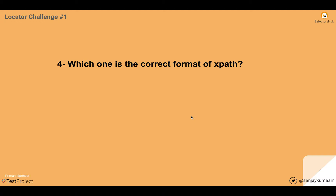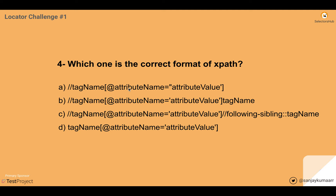Next question: which one is the correct format of XPath? Option A — double forward slash, tag name, attribute name equals attribute value — looks correct, but checking it, the equals uses double quotes here and a single quote there, so that's not the right format. Option B — tag name, at-rate attribute name equals attribute value, tag name — forward slash is missing, so that's wrong. Option C — tag name, at-rate attribute name equals attribute value, forward slash, following-sibling double-colon tag name — this looks correct. Option D — tag name without double forward slash — so this is wrong format. The answer is C.